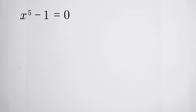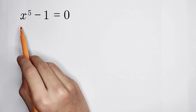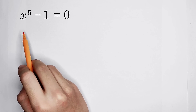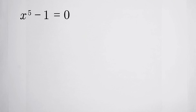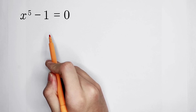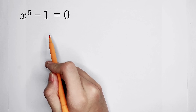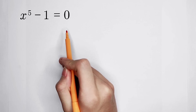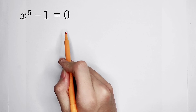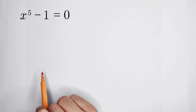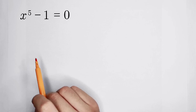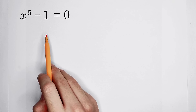Solve all the solutions of this equation: x to the power 5 minus 1 is equal to 0. How should we solve it? The left side can be factorized, and the right side is 0, so don't worry. How should we factorize the left side?